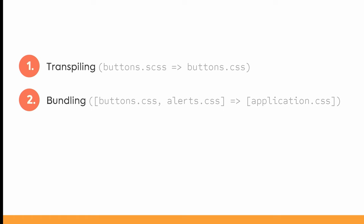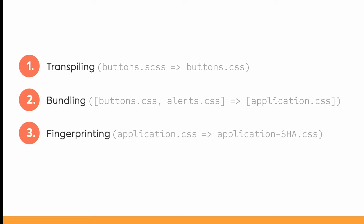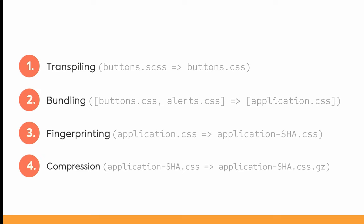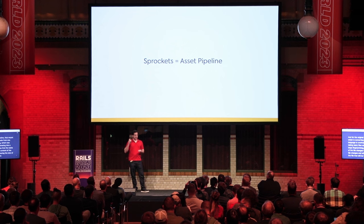Fingerprinting was ensuring that the name of the file changes when the content changes. And compression is reducing the size of the file delivered to the user. All those features used to be implemented by Sprockets alone, which is why for many years Sprockets and asset pipeline were synonymous.